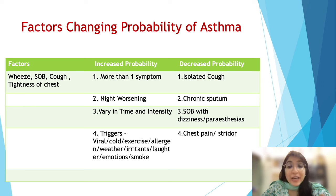To perform bronchodilator testing, stop SABA inhalers for at least 4 hours before the test. If the patient was taking twice-daily LABA such as formoterol or salmeterol, stop for at least 24 hours. If on once-daily ultra-LABAs — the latest ones — withhold for 36 hours. The timing is very important.